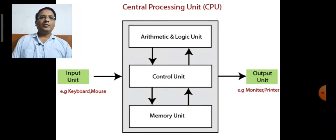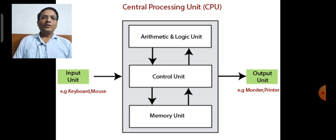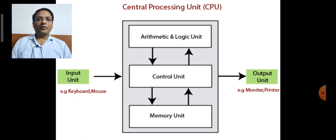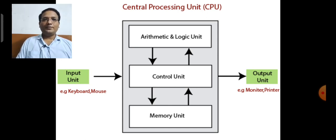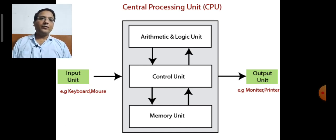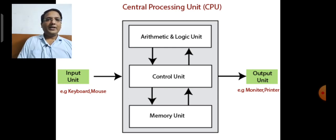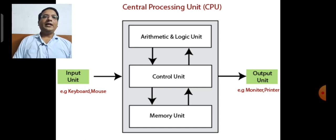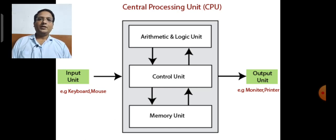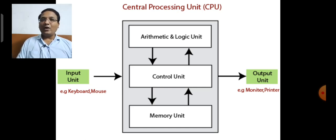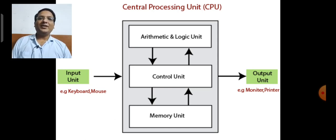Here you can see the block diagram of computer. Computer takes input from the keyboard or mouse. Who will process it? CPU. CPU consists of three parts: arithmetic and logic unit, control unit, and memory unit. And where you can see the output on the output screen, that is monitor.